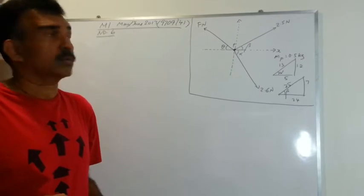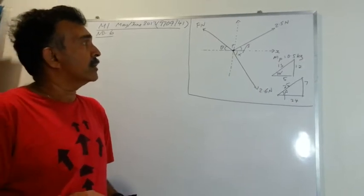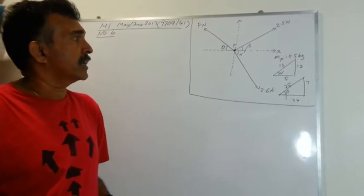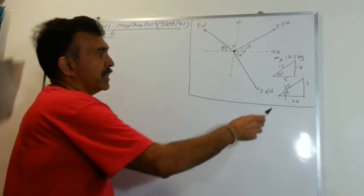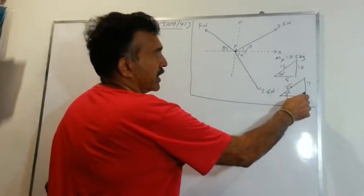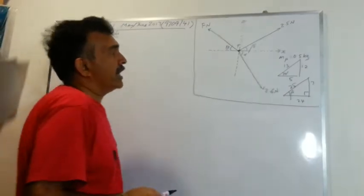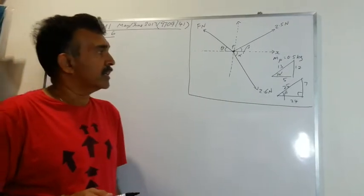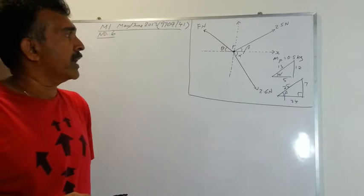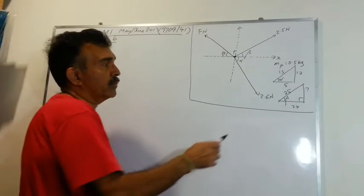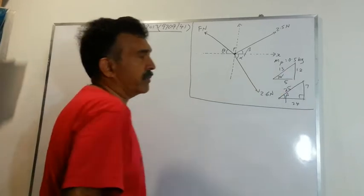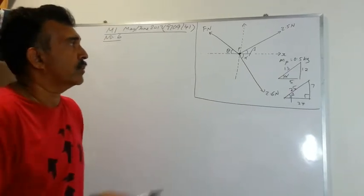Their directions are also given with the angle beta given as tangent beta is 7 over 24. So using Pythagoras right angle triangle you can get the hypotenuse. The 2.6 N is also given its magnitude and the angle is alpha, tangent alpha is given 12 over 5, so we can write the hypotenuse as 13.